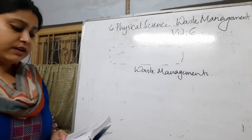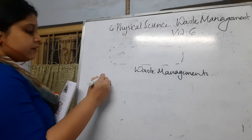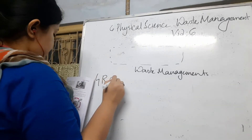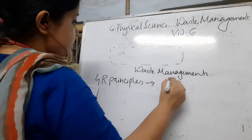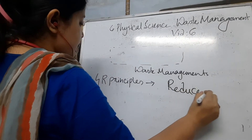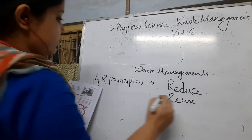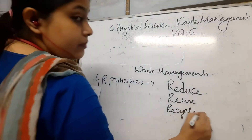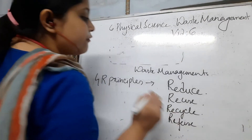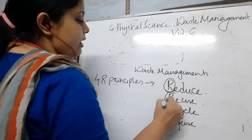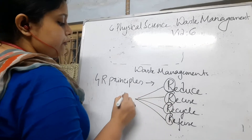We are introducing the 4R principle for the reduction of waste products. These 4R principles — the 1st one is Reduce, the 2nd one is Reuse, the 3rd one is Recycle and the 4th one is Refuse. For all 4 of them, the 1st letter is R, so that is why it is called the 4R principles.